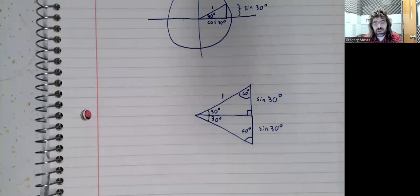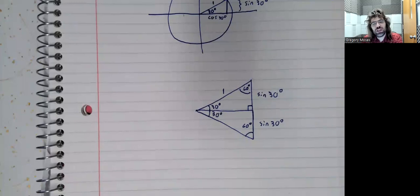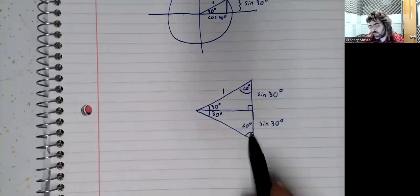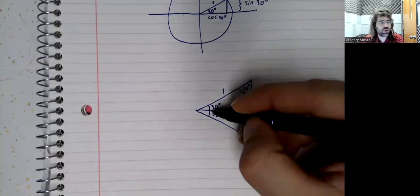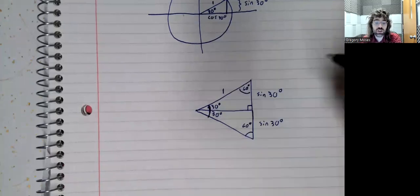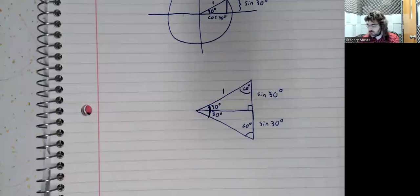And what emerges is that this big triangle is equilateral. This is 60 degrees, this is 60 degrees. This angle here is 30 plus 30 equals 60 degrees. So all of the angles are the same, so all of the sides are the same.